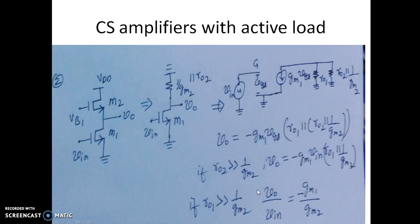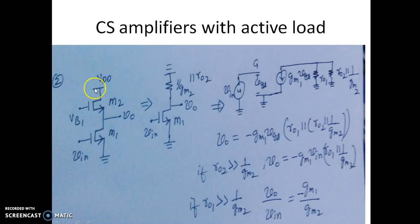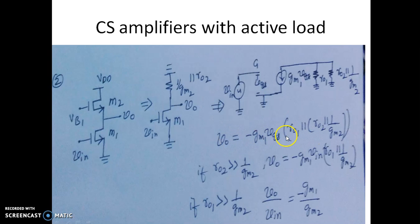Similarly, if two NMOS transistors are used, VB is the bias voltage. Looking towards the source with lambda non-zero, it is 1/gm ∥ R0. So the output expression involves R01 ∥ R02 ∥ (1/GM2). Assuming R02 >> 1/GM2 and R01 >> 1/GM2, we can simplify the expression for V0.